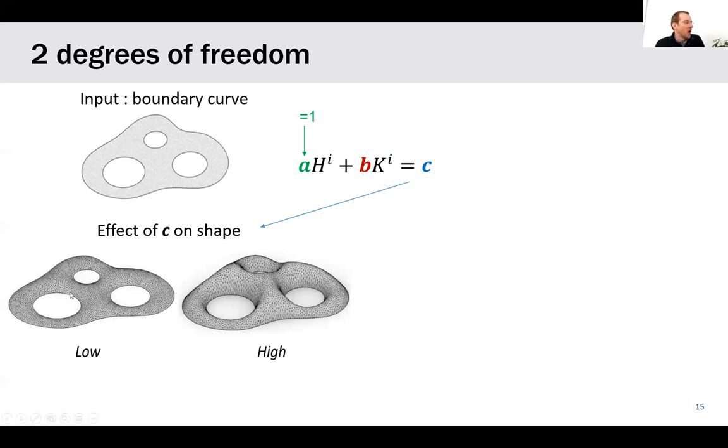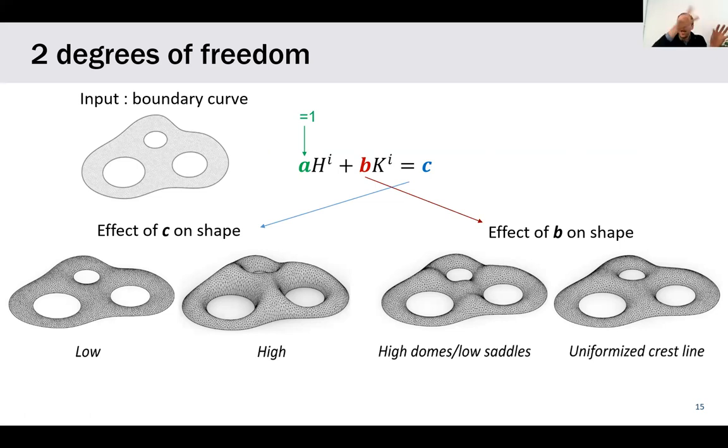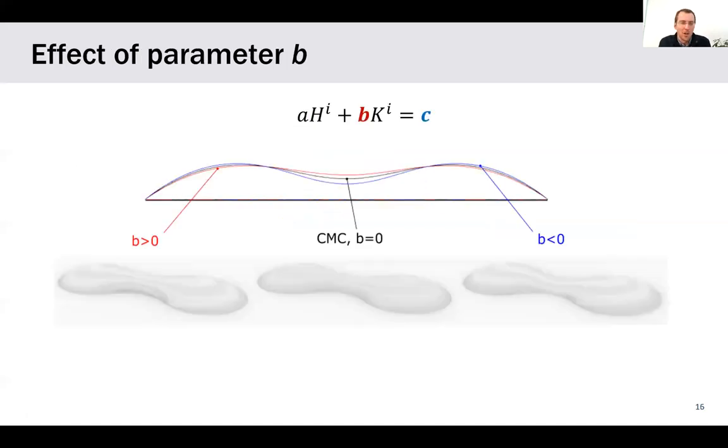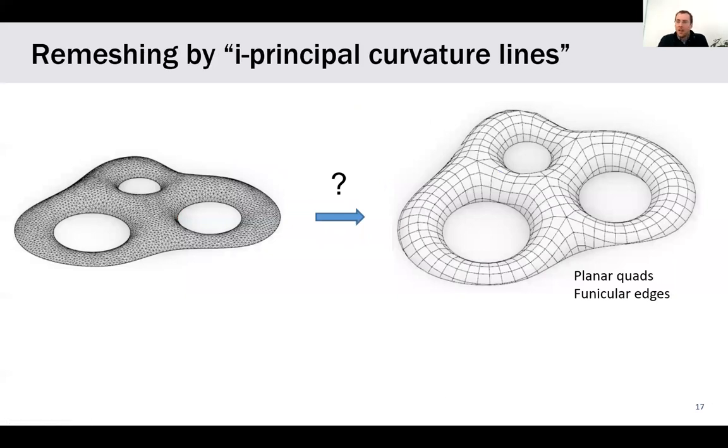Parameter B will have a different effect. It will control the height difference between domes and saddle points. On the left here, you have quite marked valleys. Whereas on the right, we varied B such that we have a much more uniform crest line. The difference is more visible on this example. We have this closed height-like boundary loop. With a negative B, you see we have this very marked saddle, the height difference between the mountain top and the saddle. Whereas with a positive B, we have this much more uniform shape.